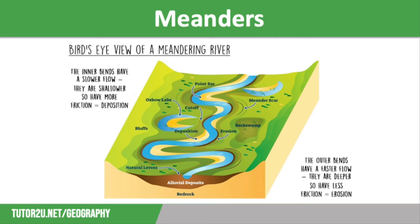On the side where the fast water is, there is more erosion in the form of abrasion and hydraulic action. This makes the river deeper and cuts into the bank to make a river cliff. As the helicoidal flow corkscrews between bends, it hits the top part of the outer bank but the lower part of the inside bend.